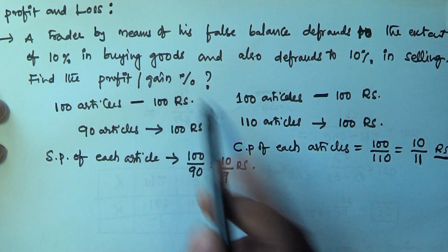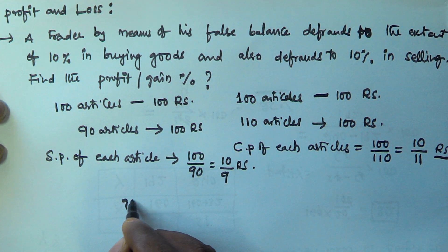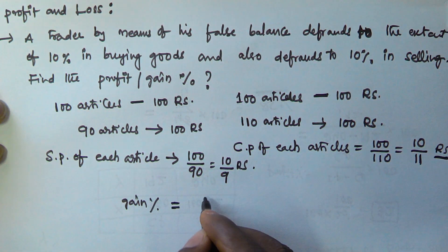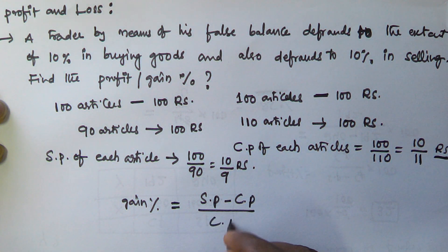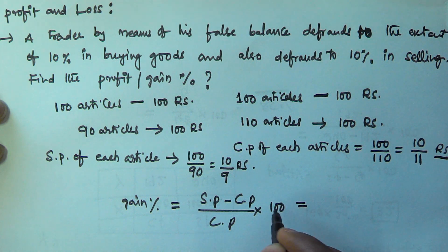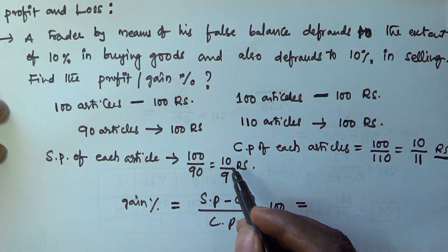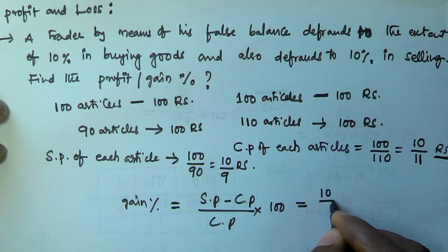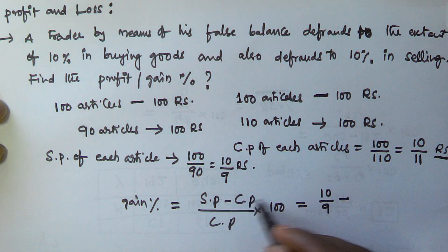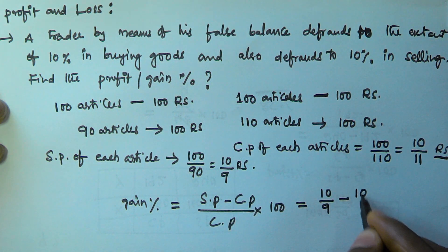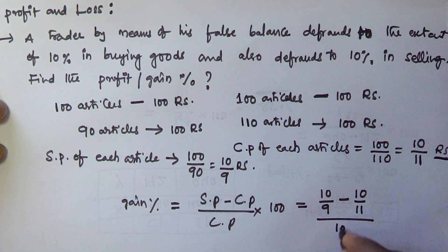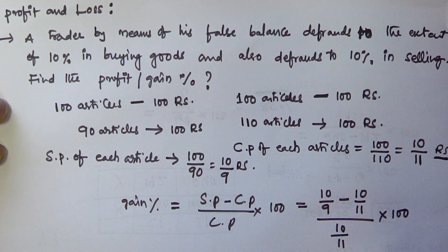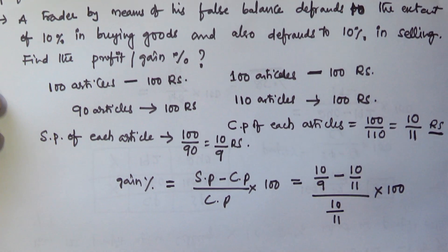Now we have to find the gain percentage. We know that gain percentage is given by: (Selling price minus Cost price) divided by Cost price, into 100. So here the selling price is 10/9, minus the cost price 10/11, divided by the cost price 10/11, into 100.